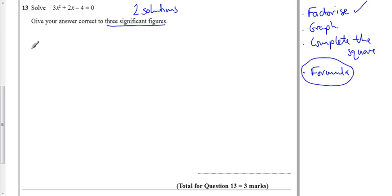So let's write the formula out, copy it from the front of the book or the formula page. Minus b plus minus the square root of b squared minus 4ac, all over 2a. Where in this case my a is 3, the number in front of the x squared, my b is 2, and my c is minus 4.